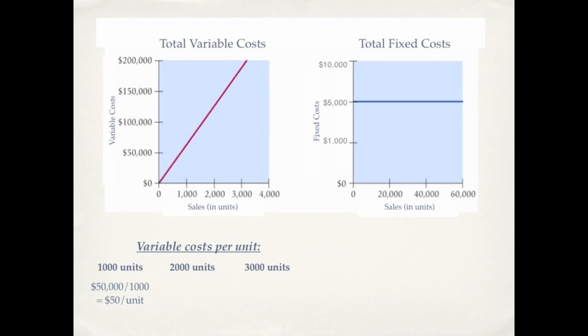Well look at the 2,000 level on the graph. See if you can figure out what the total variable costs are at 2,000 units. Now what would the per unit be? It's $50 per unit.